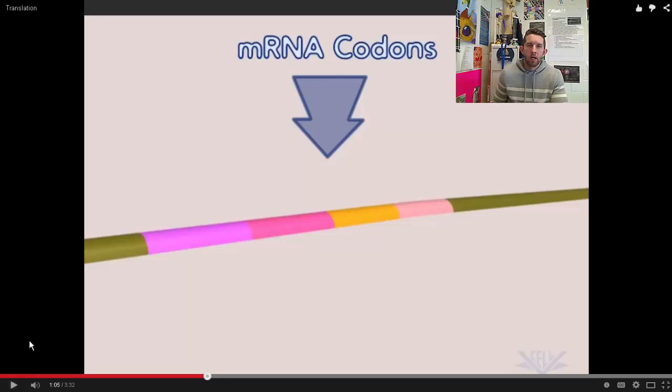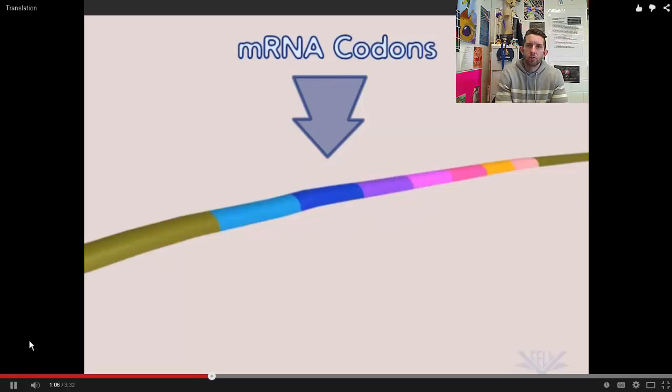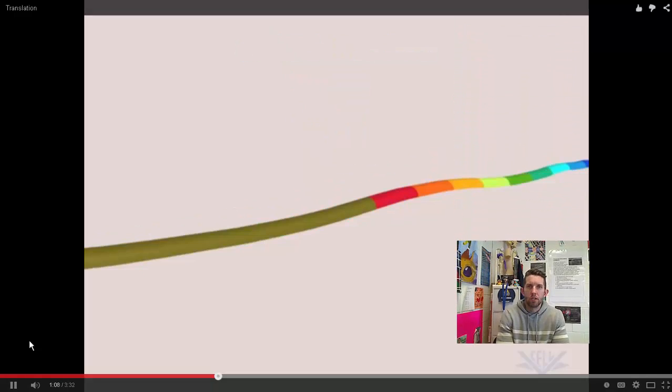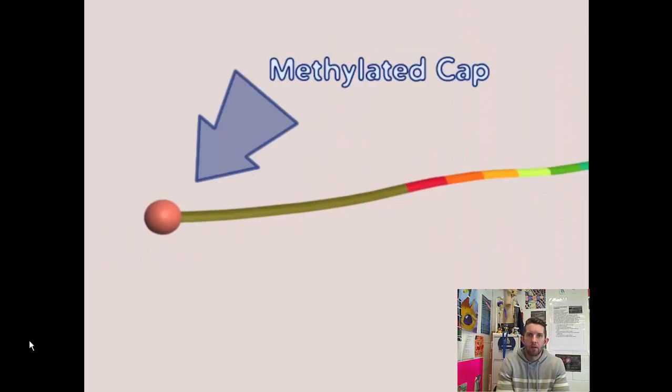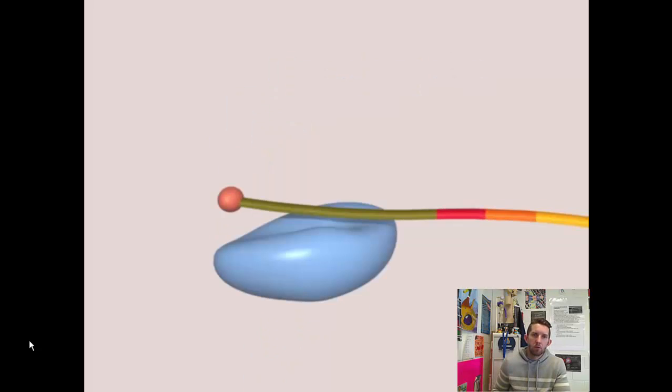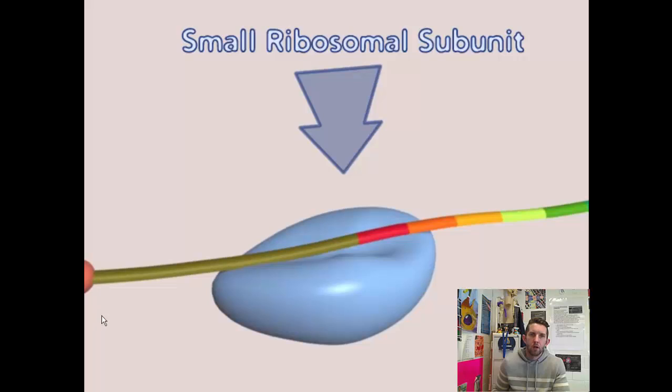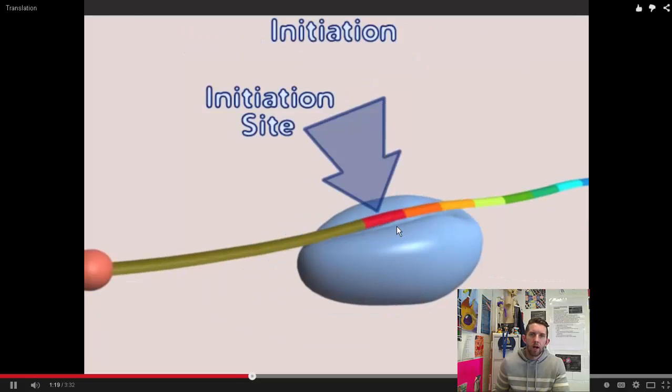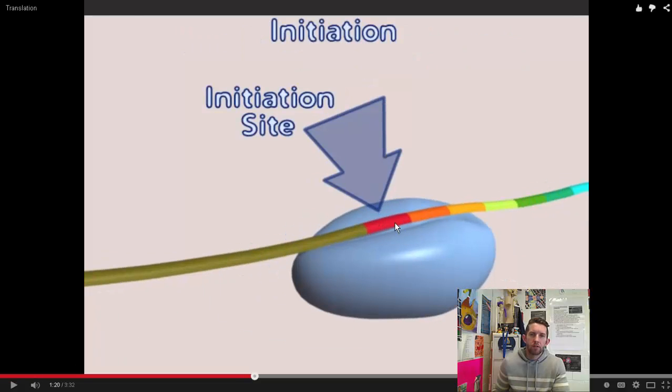And the start codon for transcription is always AUG. There's our 5' methylated cap. There's this small subunit of the ribosome coming and landing. They're going to associate first with the mRNA, and it's going to find the initiation site. It's going to find the start codon. Once again, we said it's AUG. When does school start? August. That's how I remember it. AUG. That's where transcription is going to begin.